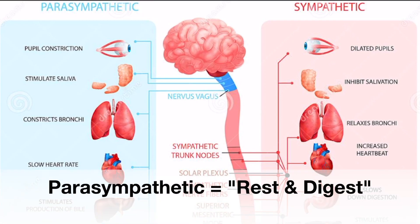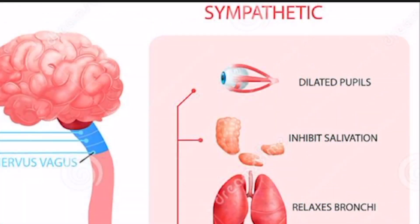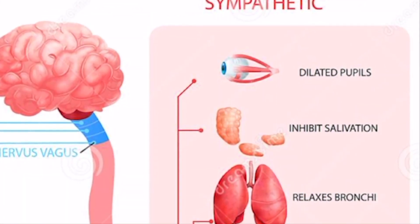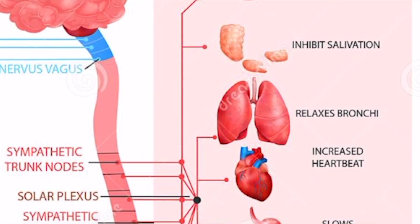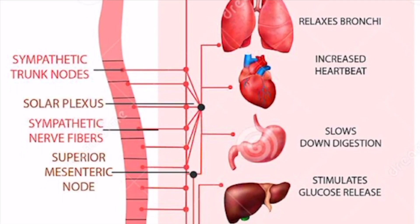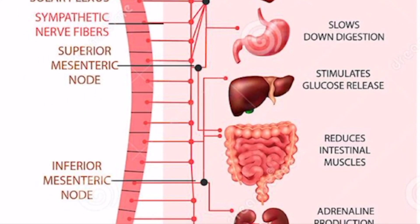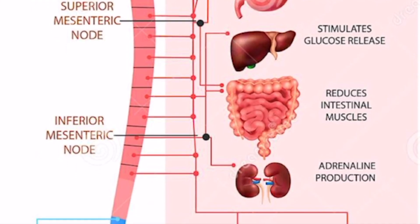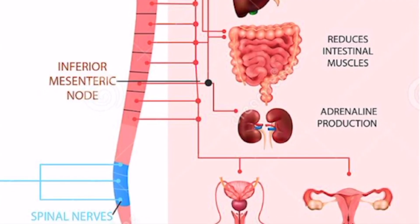The fight or flight sympathetic system can be thought of with the question: what would I want my body to do in a danger situation? For example, if I was scared of a dog, my sympathetic system would kick in. I'd want to dilate my pupils for better vision, inhibit salivation or digestion, relax lung bronchial muscles to open airways, get more adrenaline and glucose for immediate energy, and increase heart rate to get more blood flow to the muscles.